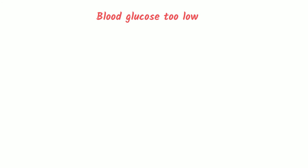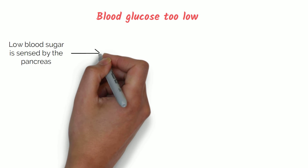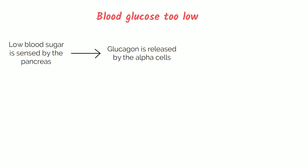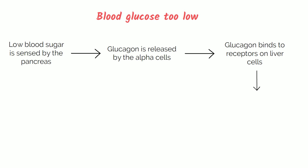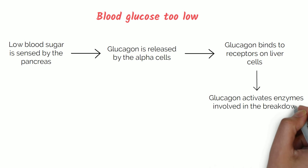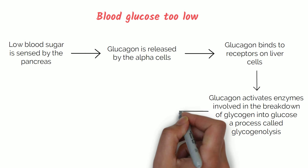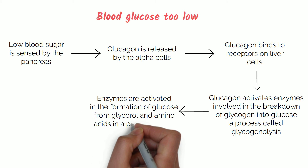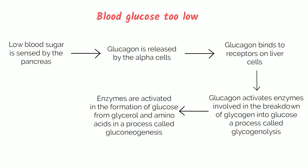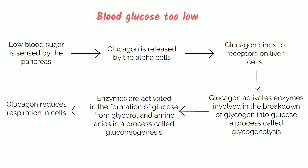When blood glucose is too low, the low blood sugar is sensed by the pancreas and glucagon is released by the alpha cells. Glucagon binds to receptors on liver cells and activates enzymes involved in the breakdown of glycogen into glucose — a process called glycogenolysis. Enzymes are also activated in the formation of glucose from glycerol and amino acids in a process called gluconeogenesis. Glucagon reduces respiration in cells, and these actions overall help to increase blood glucose levels.